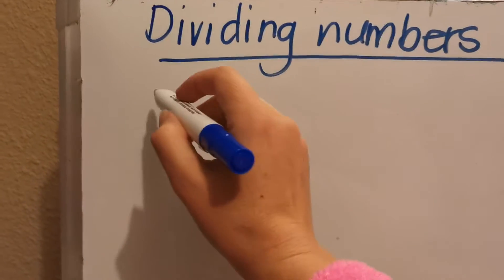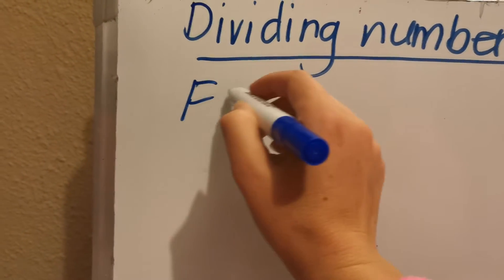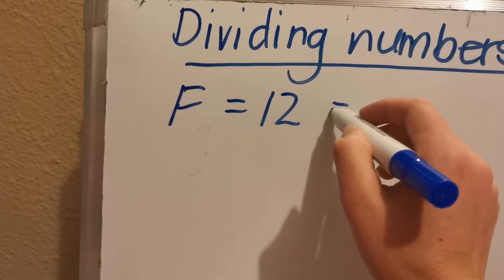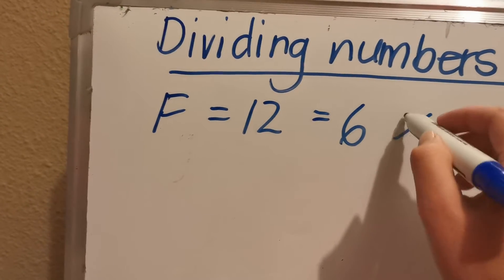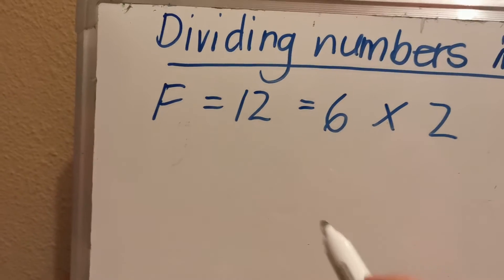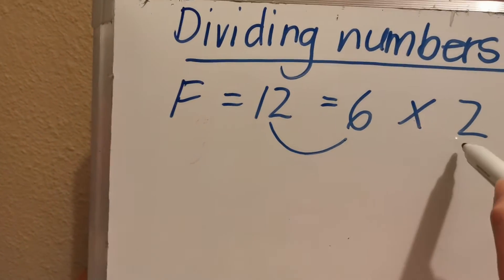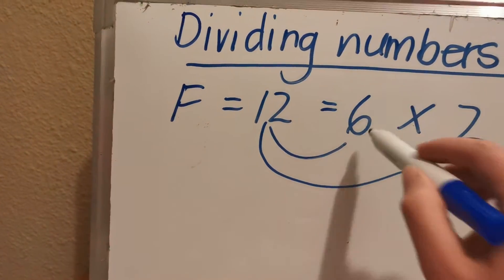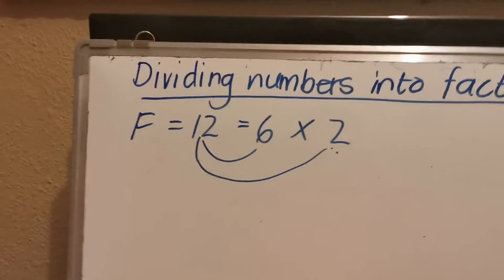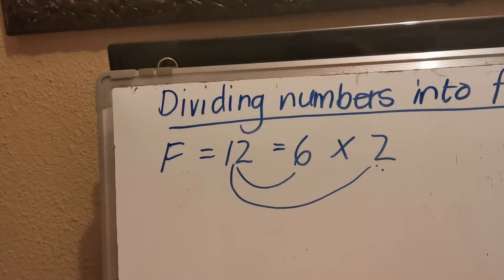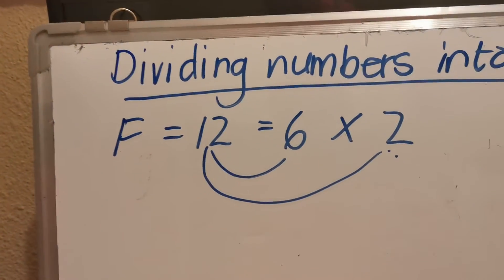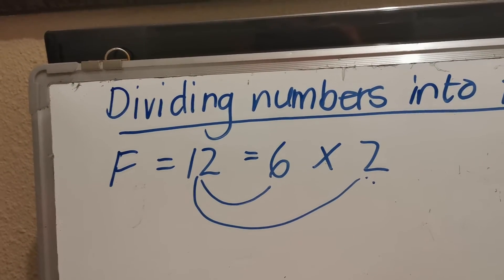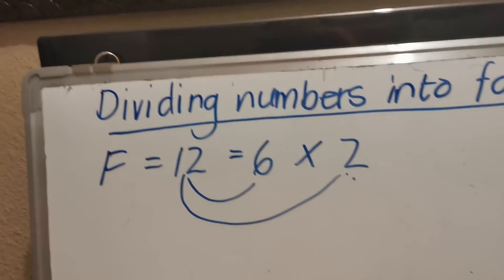For example, the factors of 12 are 6 and 2. So the factors of 12 are 6 times 2. Because you can say 12 divided by 6 will give you 2 and 12 divided by 2 will give you 6. So 12 can be divided exactly by 6 and 2. 12 can be divided into both 6 and 2 without remainder.